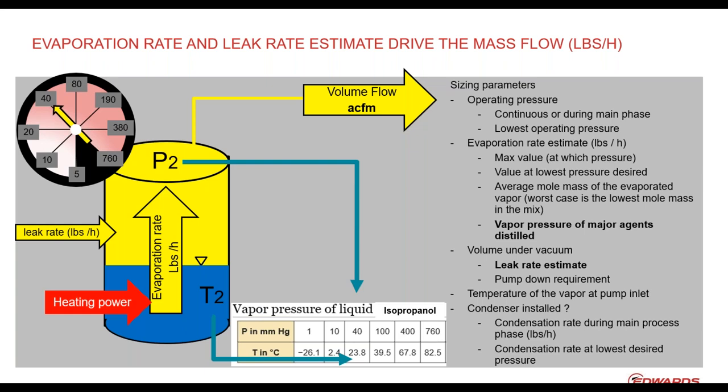The other element again refers to webinar one. I picked a simple example: isopropanol (IPA). Assume the liquid in the reactor is isopropanol at a temperature of about 24°C. Consequently, the pressure in the reactor cannot go lower than 40 millimeters of mercury, because that is the vapor pressure of isopropanol at that temperature. At this temperature and that pressure, applying heating power drives an evaporation rate.